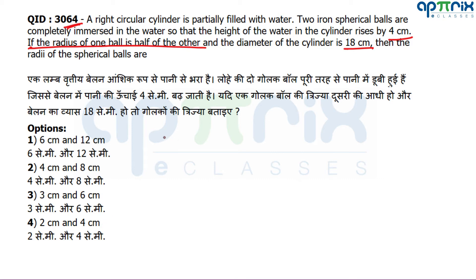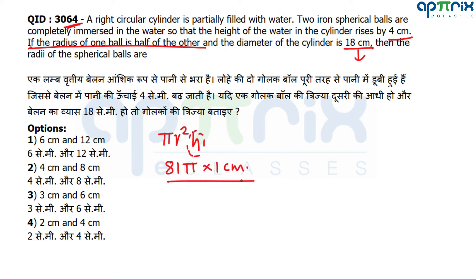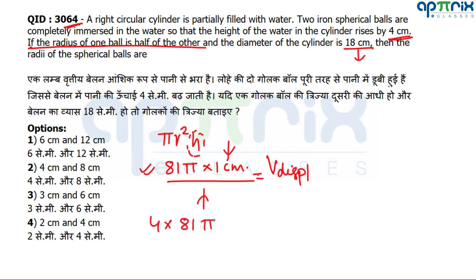The volume of the cylinder is πr²h = π × 81 × h. If the height rises by 1 cm, the displaced volume is 81π. The total rise is 4 cm, so the total displaced volume is 4 × 81π = 324π. This displaced volume equals the combined volume of the two spherical balls.